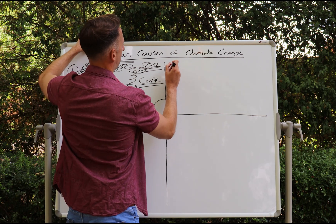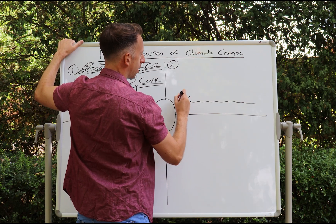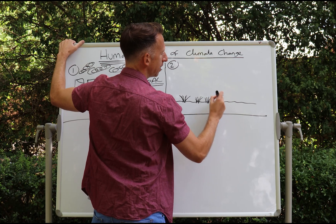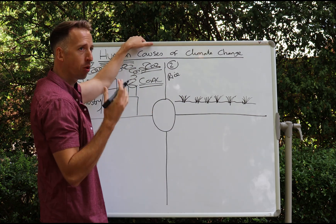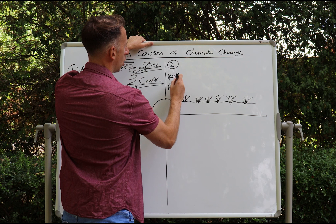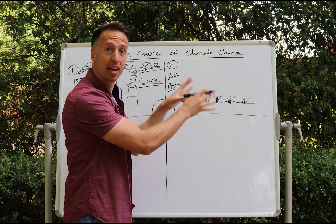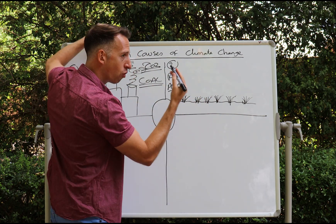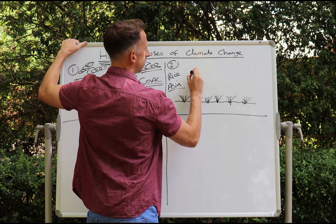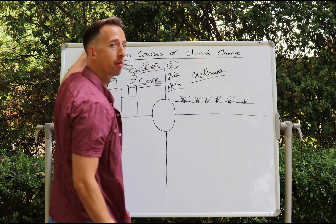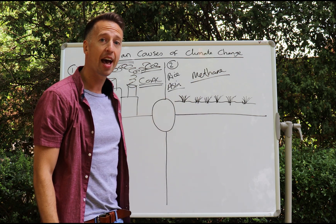Human cause number two: around the world we have an increase in agricultural activity. What I'm drawing here is a paddy field to show the farming of rice, very popular in the continent of Asia, which has the largest population of all the continents. Rice farming, along with livestock farming, produces large amounts of the gas methane. So agricultural activity is our second cause.